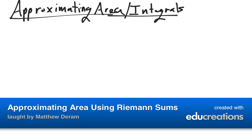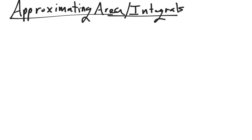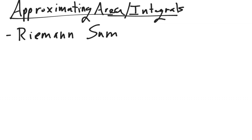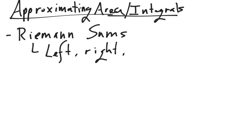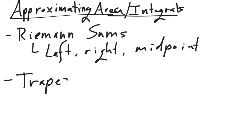This video will teach you how to approximate area or integrals, since we now know that they're essentially interchangeable. We will be doing this using something called Riemann sums — that's R-I-E-M-A-N-N — Riemann sums. There are three types: left, right, and midpoint sums. There is also something called a trapezoid sum that I will teach you how to do as well.